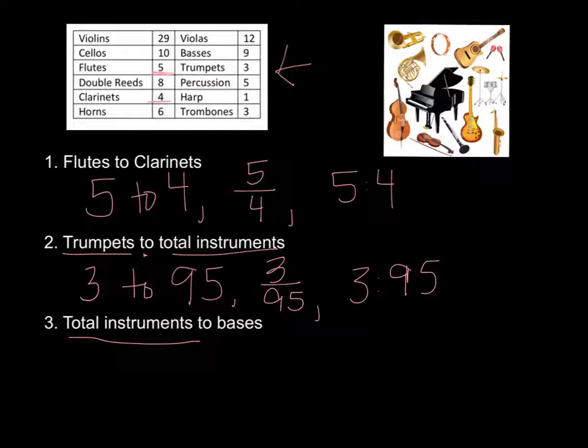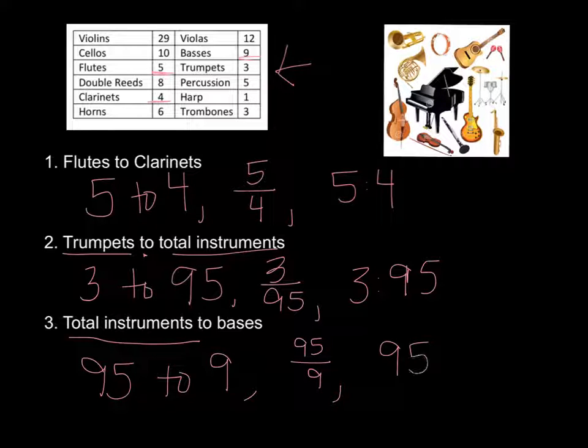Now if I want to do total instruments 95 to bases 9, I'm just looking back up at my table to see where I'm getting how many kids played that instrument. 95 to 9. So now here I would do an improper fraction and then 95 to 9. And remember when we're talking ratios we don't do the units afterwards, we just have two numbers that we're comparing.